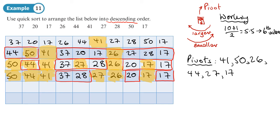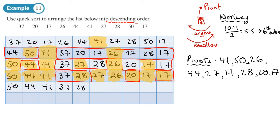The next pivots are 28 (right of center), 20, and 17. Single numbers pivot around themselves. So 28 is chosen as a pivot and doesn't move. This gives us: 50, 44, 41, 37, 28, 27, 26, 20, 17, 17.